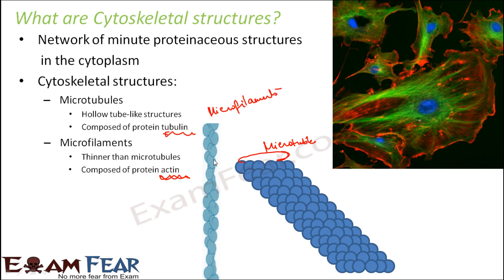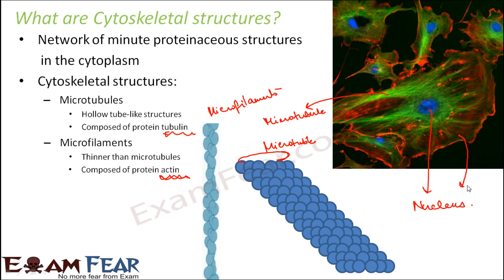In this picture you can see the actual cytoskeleton. The blue-colored central object is the nucleus. The thicker green-colored tubes are the microtubules. The thinner red-colored structures formed over the microtubules are the microfilaments. This is how the skeleton of a cell actually looks. It forms the basic framework of the cell, over which the cytoplasm and cell organelles are present, providing the necessary structural support.